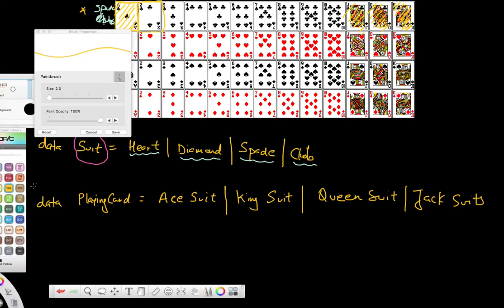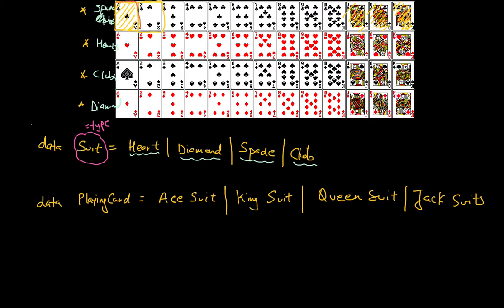By having these four value constructors — Ace, King, Queen, and Jack — I've taken into account these sets of playing cards. As long as I can provide the value constructor Ace followed by some Suit, I can cover the first row across all four columns. Likewise, I can do the same for King, Queen, and Jack. So I've got a total of 16 possible cards already taken care of by having these four value constructors.